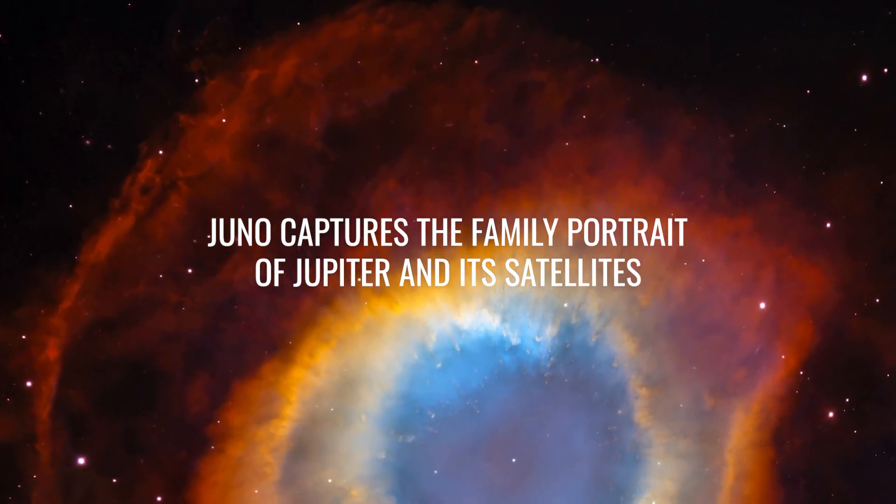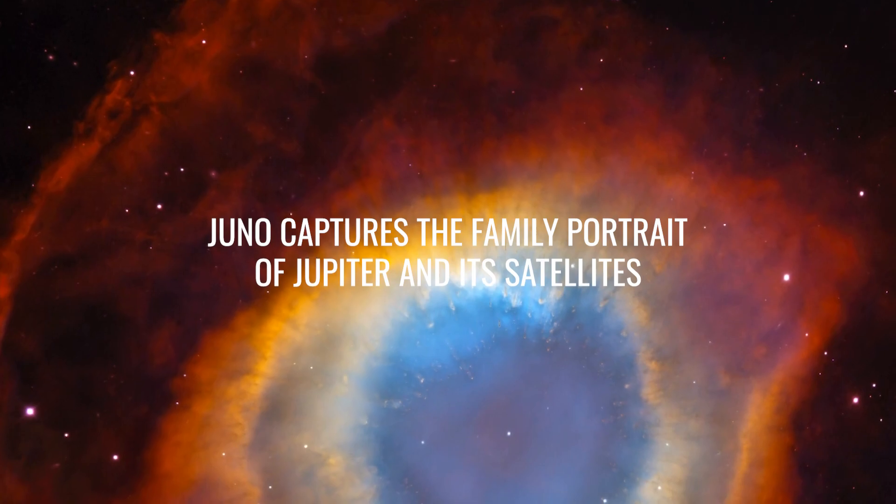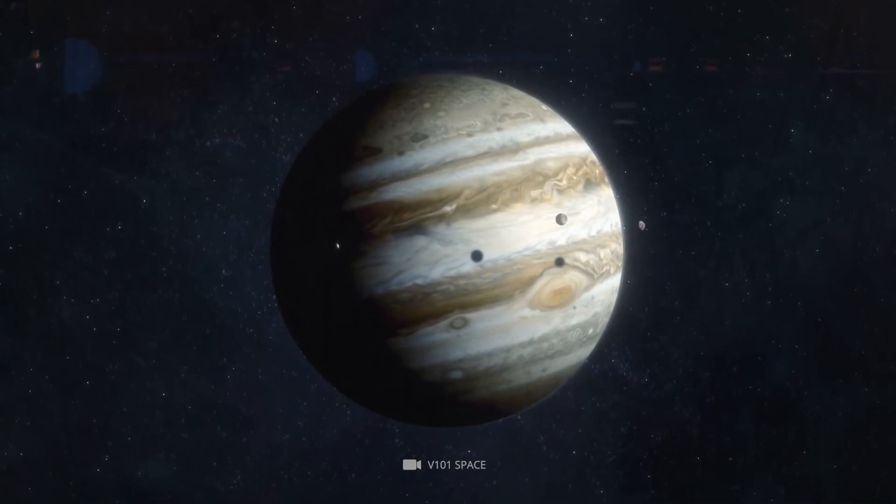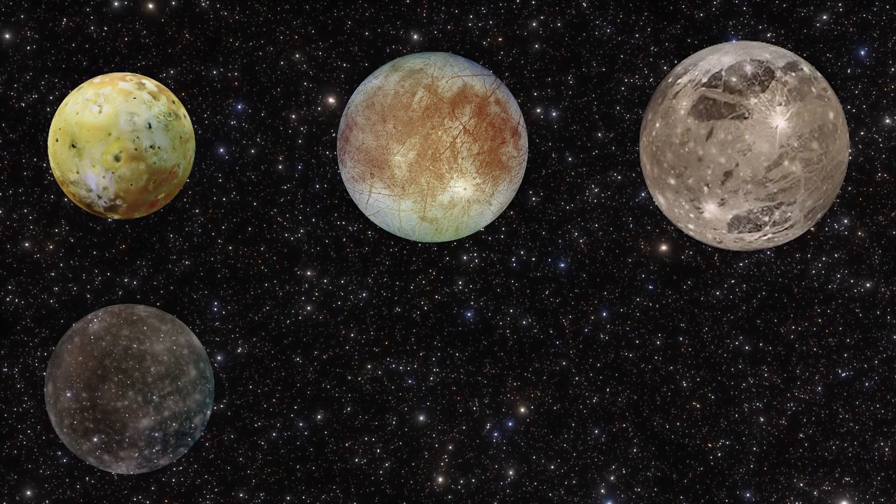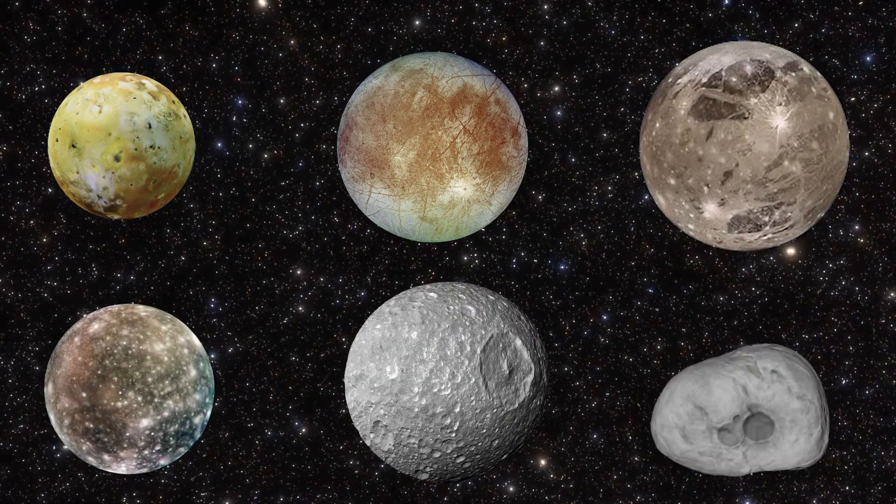Juno captures the family portrait of Jupiter and its satellites. Jupiter is known for its many satellites, Io, Europa, Ganymede, Callisto, Amathea, and Himalia.